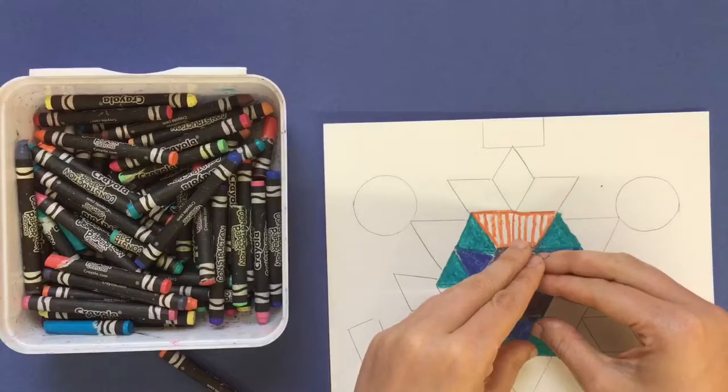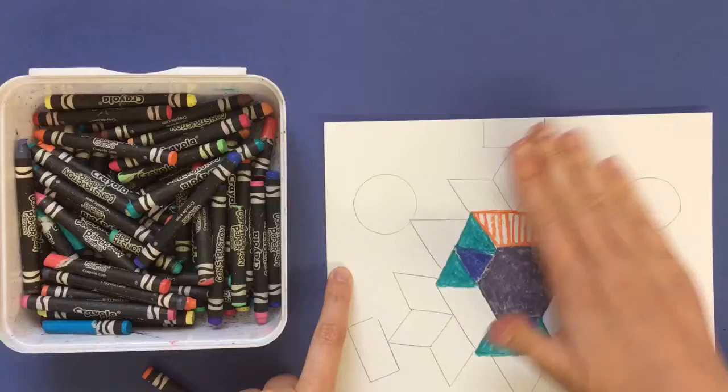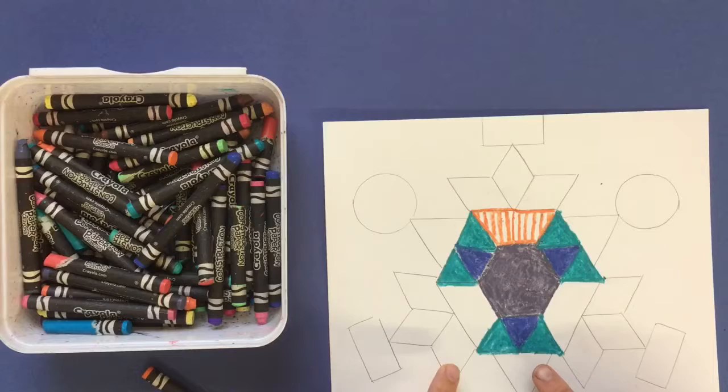I would continue filling in my shapes working from the center out, and you also want to make sure that you don't color in any of your background space. You want to leave all of your background space blank, and then that will get painted with ink and it'll turn black. Only color in the shapes that you traced.